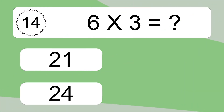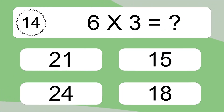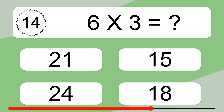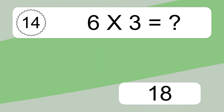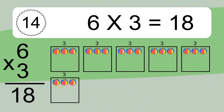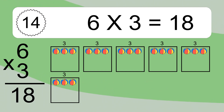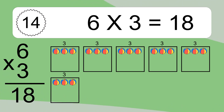6 times 3 equals what? 6 times 3 equals 18. We have 6 boxes, and each box has 3 colorful balls inside. If you count all the balls in all the boxes together, you will have 6 times 3 balls. This equals 18 balls.